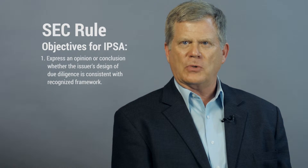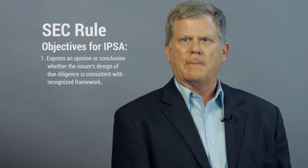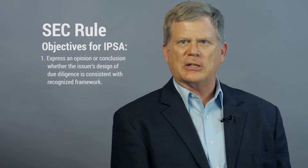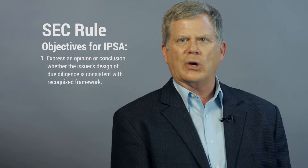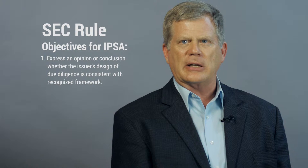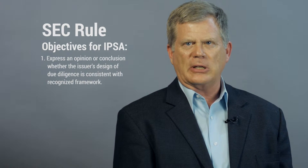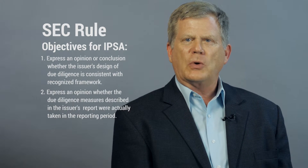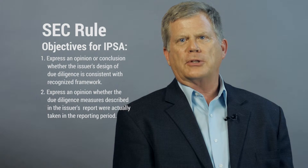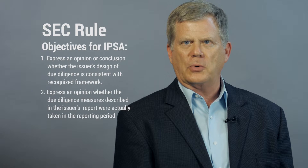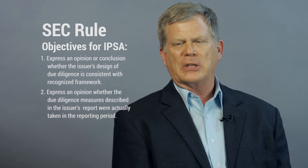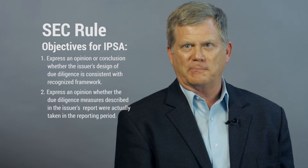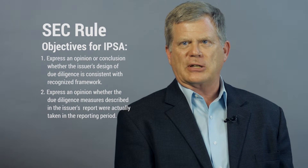The SEC rule includes two objectives for the independent private sector audit. The auditor must express an opinion or draw a conclusion as to whether the issuer's design of due diligence is consistent in all material respects with a nationally or internationally recognized framework. As a practical matter, the OECD due diligence guidelines has been the due diligence framework adopted by nearly every public issuer. Objective number two requires the auditor to express an opinion as to whether the due diligence measures described in the conflict minerals report were actually taken in the reporting period. In other words, did you do what you said you did? Those are the two objectives of the independent private sector audit, and that's it.